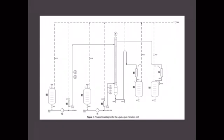Open the outlet vessel valves: HV02, HV24, HV07, and HV22. Switch on the pump to allow the acetone-water solution, which is the heavy phase, to enter the column.